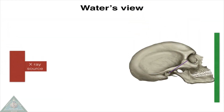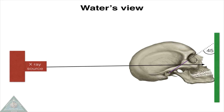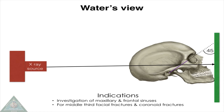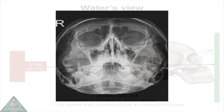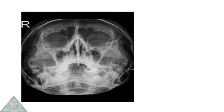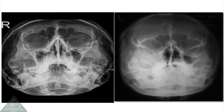Waters view: the patient faces the image receptor with the head tilted backwards so that the cantho-meatal line makes an angle of 45 degrees to the image receptor. The X-ray beam is directed perpendicular to the image receptor and through the occiput. This radiograph is mainly indicated for evaluation of the paranasal sinuses, especially the maxillary sinus.